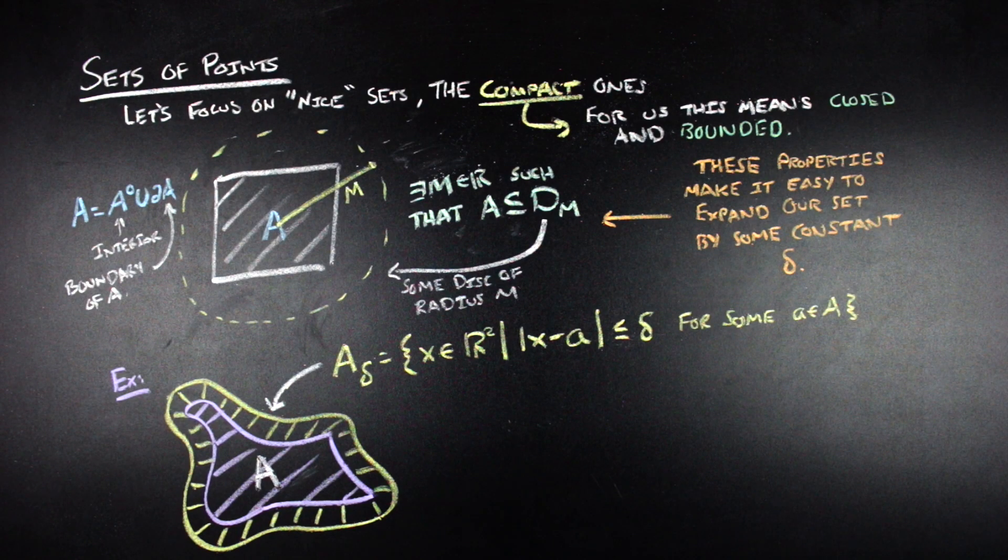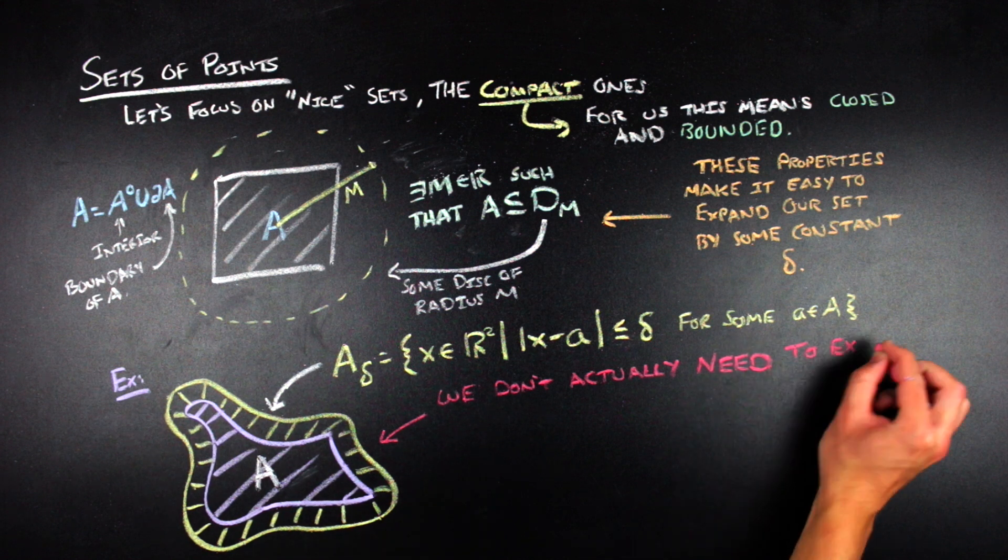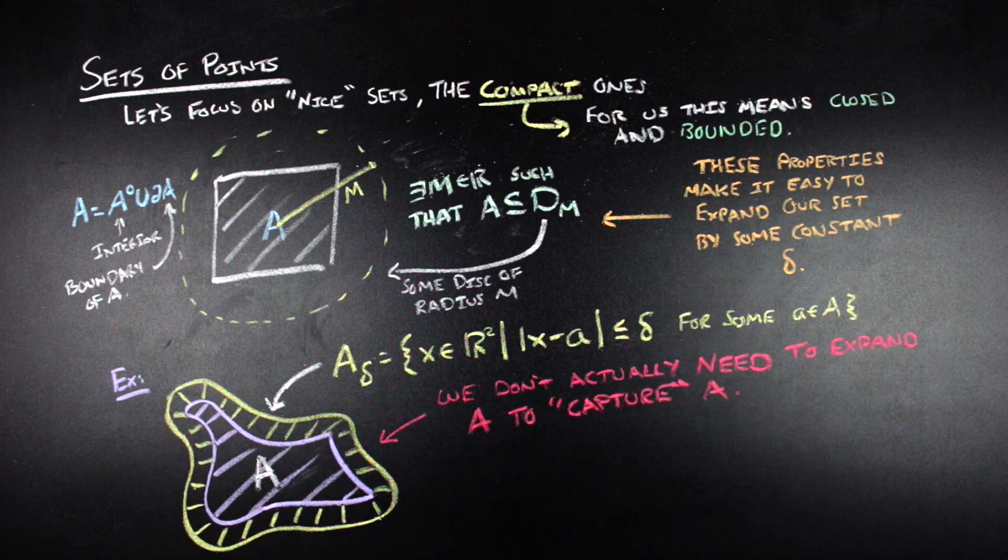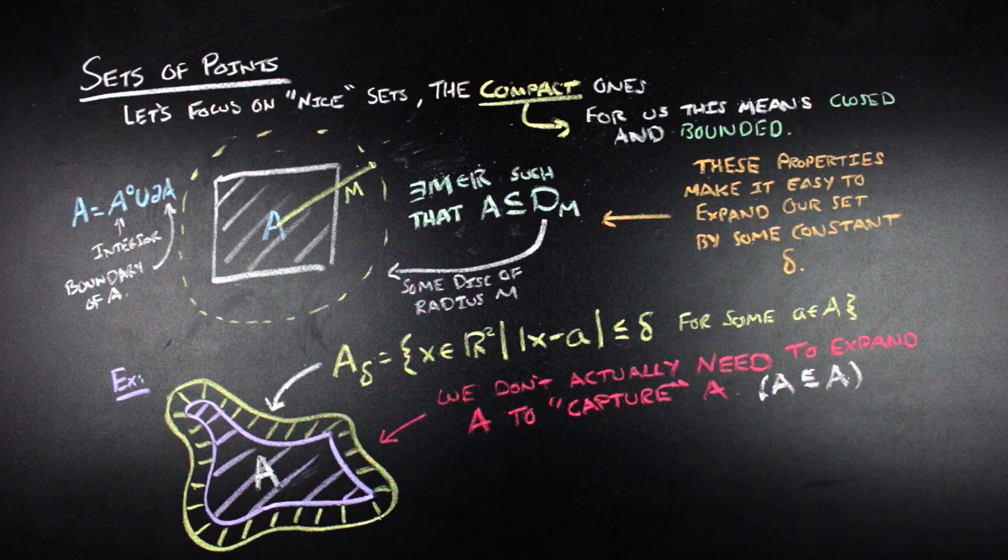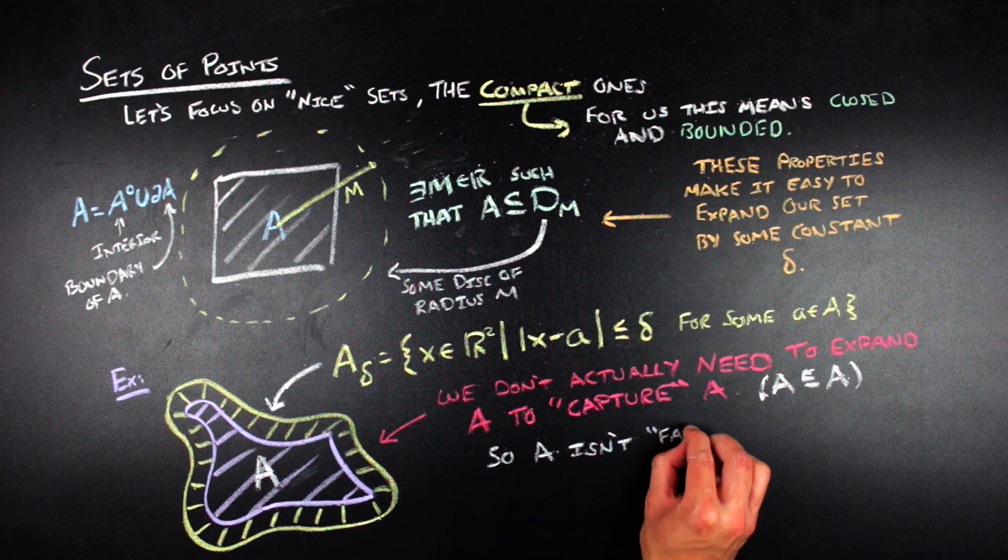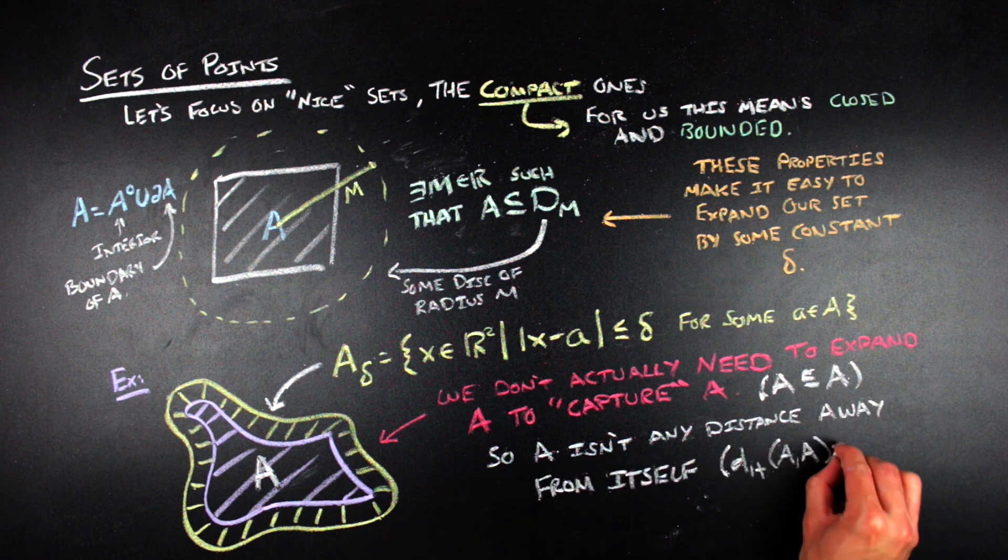It might not always be the case that A delta has a boundary that looks exactly like A, but that's beside the point. The first thing to notice about these A delta sets is that we actually don't need to expand a set in order to contain itself. That being, every set is a subset of itself, so it seems like a good candidate to say that the distance between two sets that are the same is just zero, if we think about how much we need to expand them in order to contain themselves. This idea of how much we need to expand a given set in order to contain another is going to be the main motivation for defining what Hausdorff distance is, or what the distance between two sets of points is.